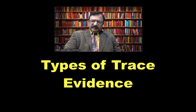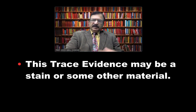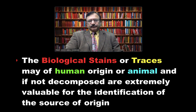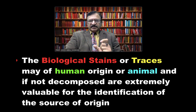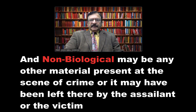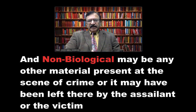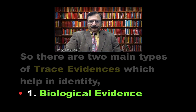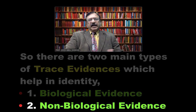There are various types of trace evidence. Trace evidence may be in stain form or any other material, and the origin of the stain may be either biological or non-biological. Biological stains or traces may be of human or animal origin, and if not decomposed, they are extremely valuable for identification of the source. Non-biological material may be anything present at the scene of crime left by the assailant or victim. So there are two main types: biological evidence and non-biological evidence.